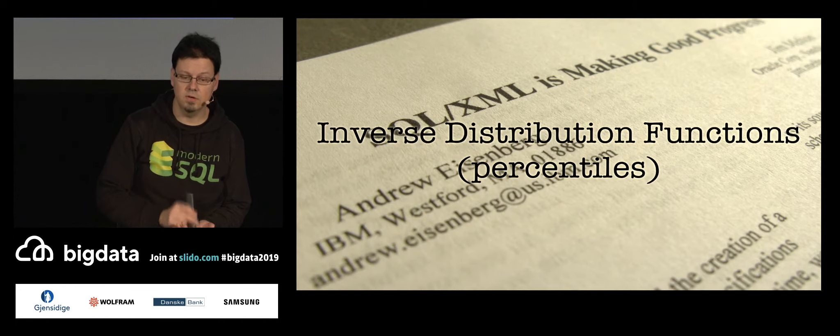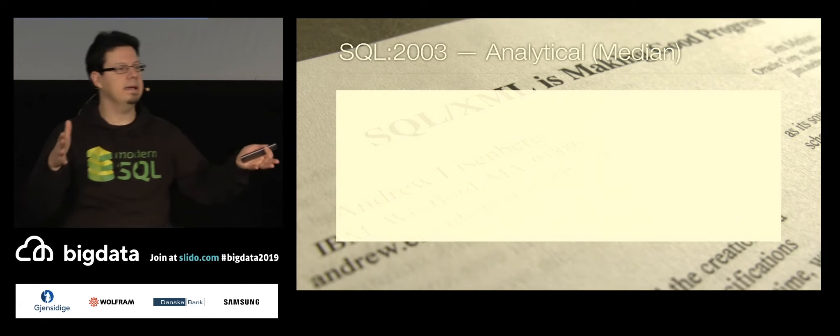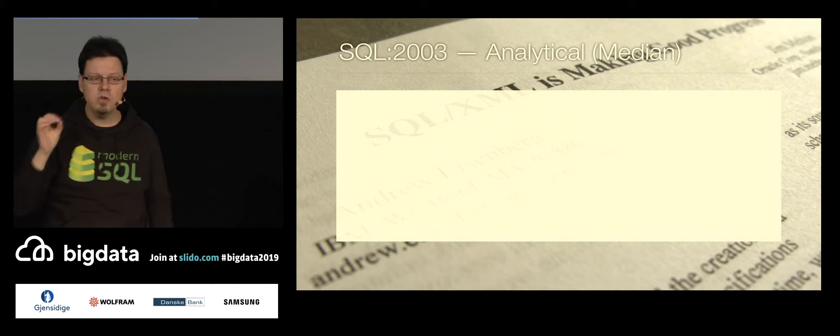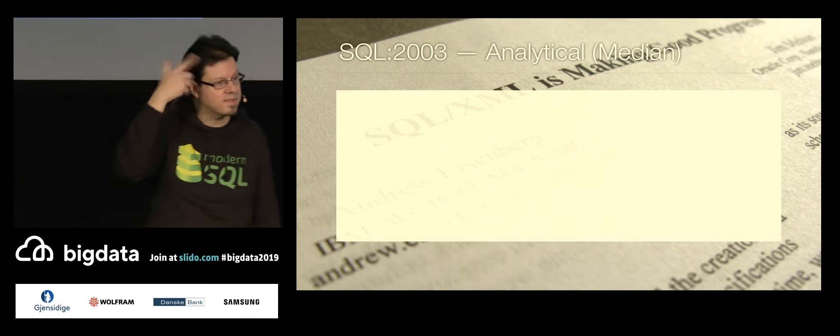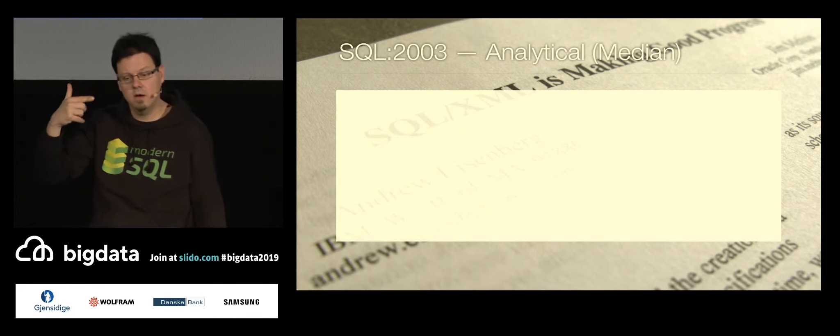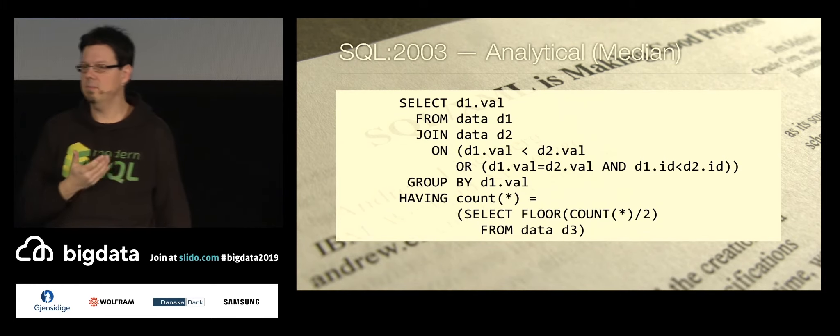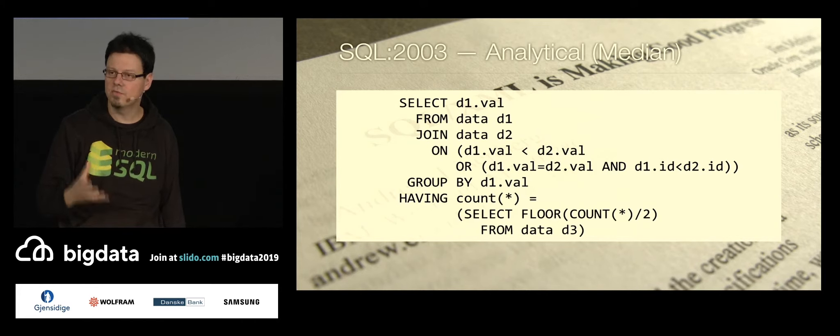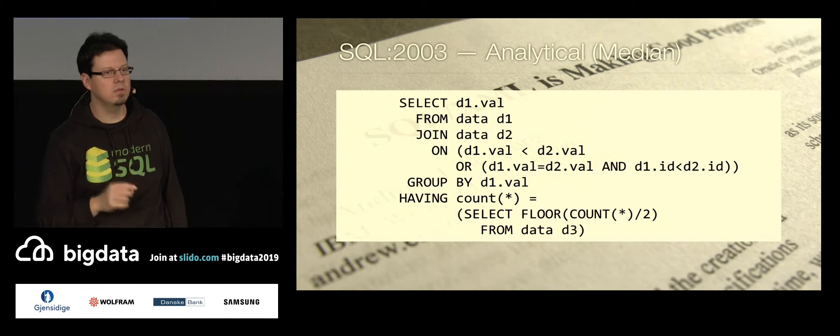Another example I would like to give you. Inverse distribution functions, percentiles. It's a really funny example, median. Just keep it simple, median. So the middle value of an ordered set. You order something and then you take the middle one. How do you do that in SQL-92, in the purely relational world of thinking? How would you do that? Oh, that's easy, isn't it? That's just a middle value. This is the result that's actually a textbook solution for this problem in SQL-92. If you are limited to the relational idea, which we are not anymore.